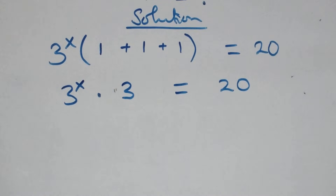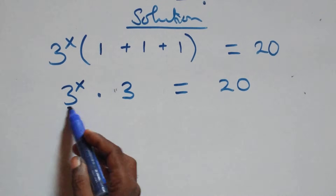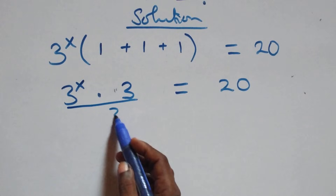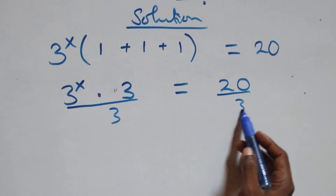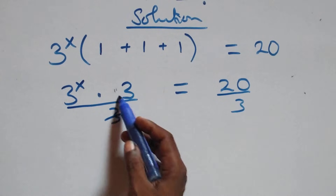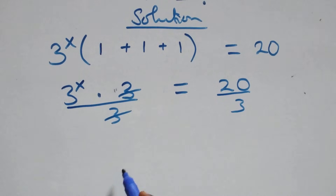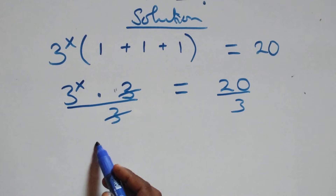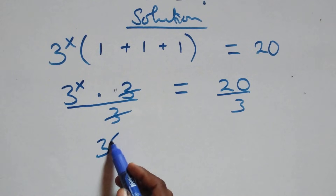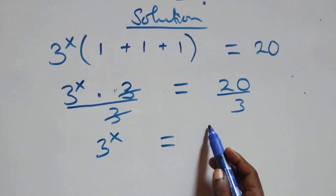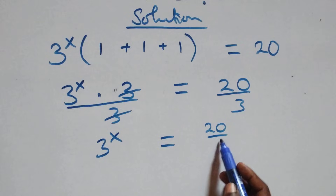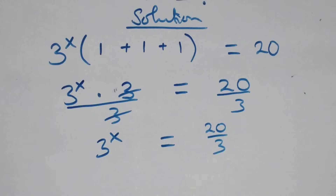Next step, divide both sides by 3. This side divided by 3, also divide this side by 3. Here the 3s cancel each other, and we have 3 raised to power x equals to 20 over 3.